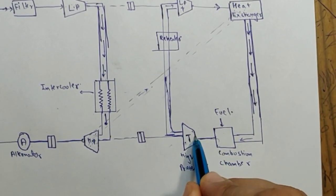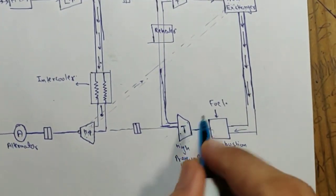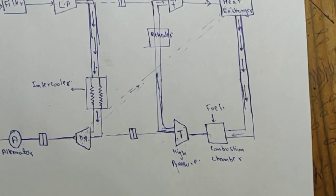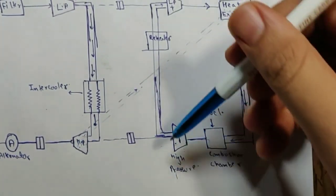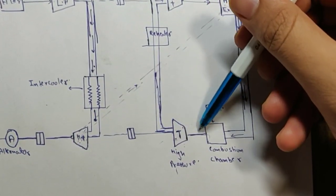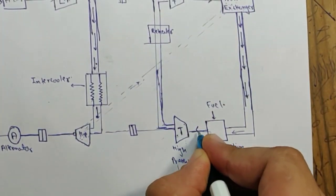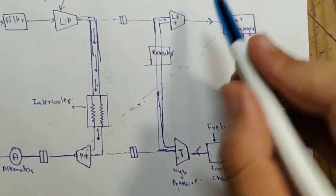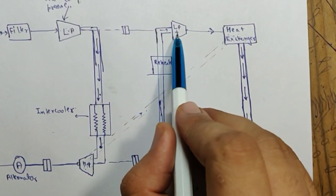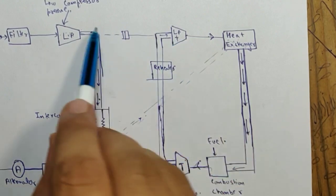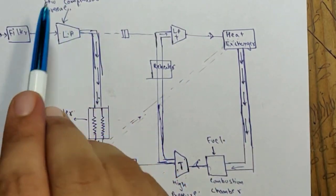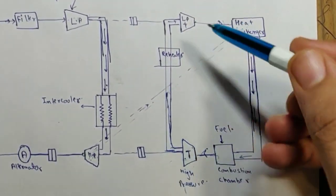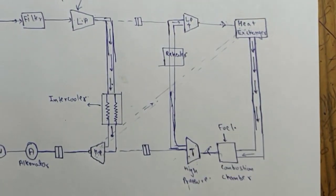After the combustion chamber, the air is sent to the high pressure turbine where it expands and produces mechanical work. This mechanical work is used to drive the alternator and the high pressure compressor. After the gas has expanded in the turbine, there is still some heat remaining — we reheat this gas and use it to drive the low pressure turbine, which is coupled with the low pressure compressor. Then the air enters the heat exchanger and the cycle repeats. This is the basic working principle of the gas turbine power plant.